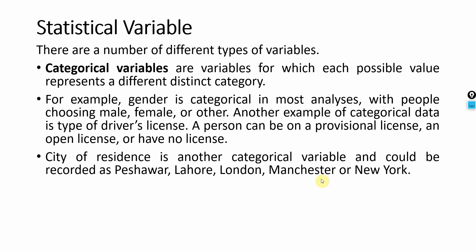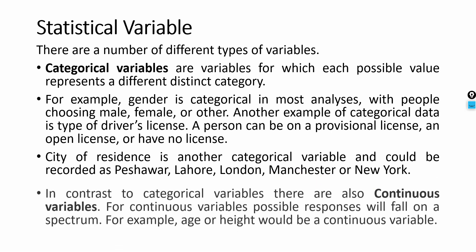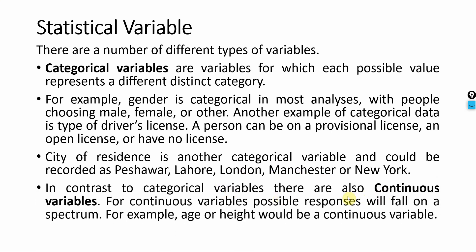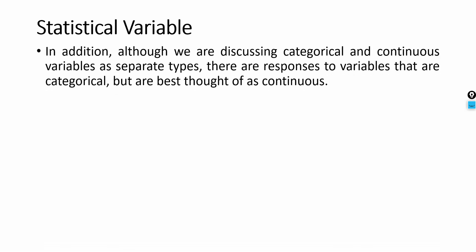In contrast to categorical variables, there are continuous variables. Continuous variables fall on a spectrum. For example, age or height are continuous variables, and weight is a continuous variable as well. Although we are discussing categorical and continuous variables as separate types, there are responses to variables that are categorical but are best thought of as continuous.